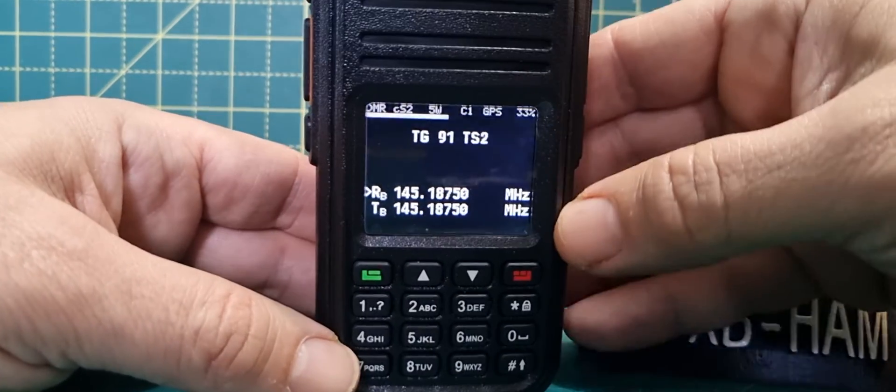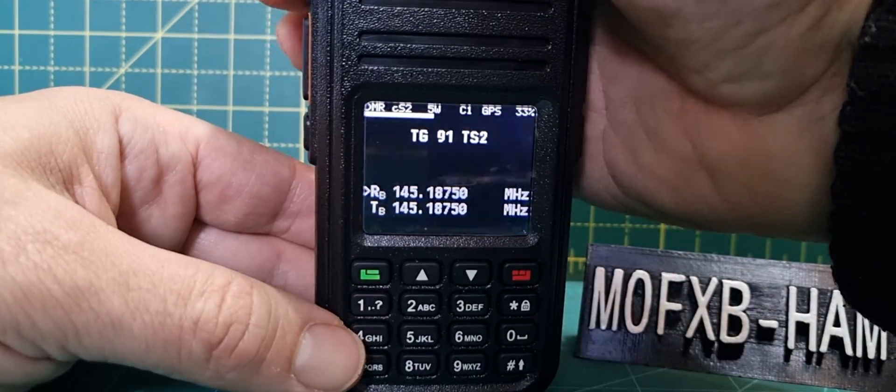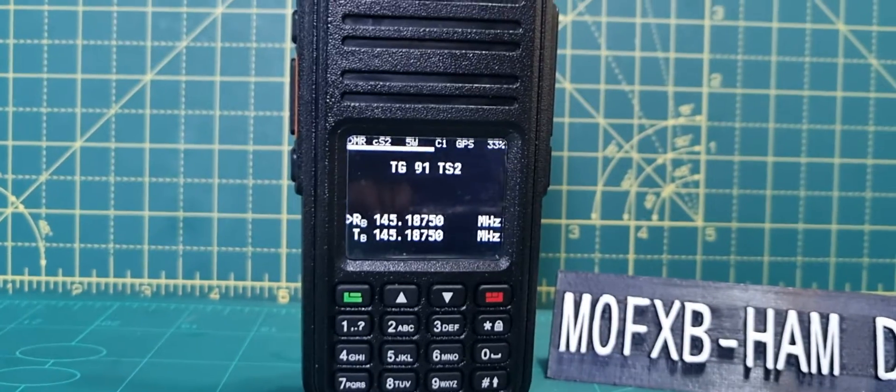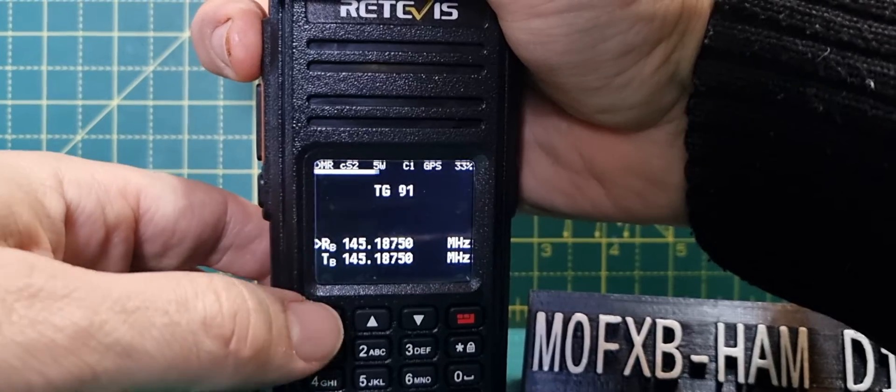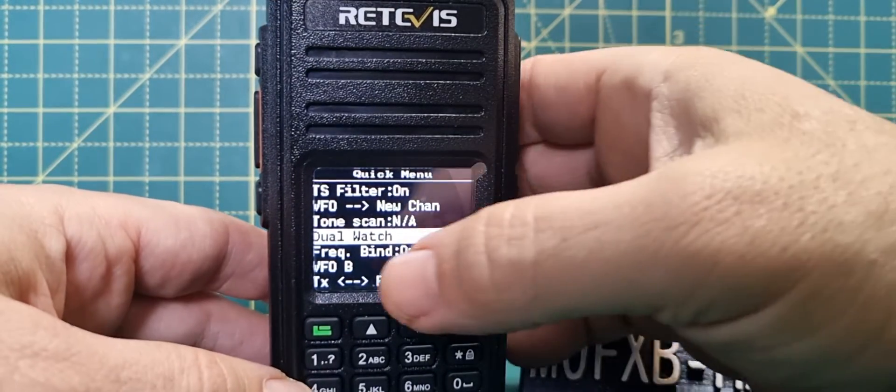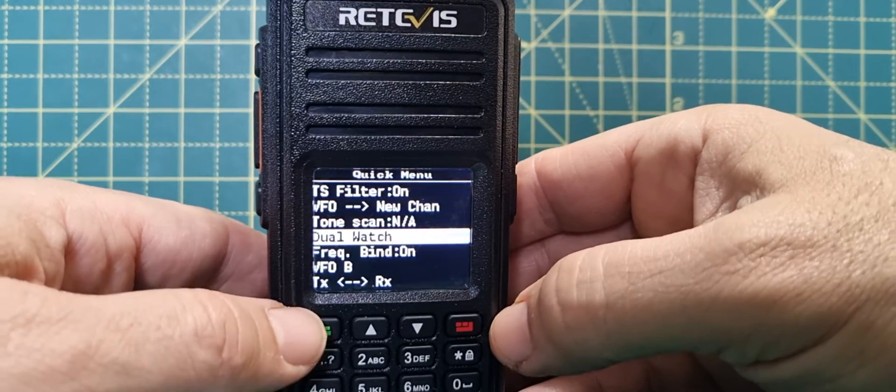Watch this. We're going to go to the top button above the PTT. Let's go a bit higher here. Hold it and then push the green button. Now this is our quick menu. There's lots of functions you can look at, but the dual watch one is here, so if we press it...